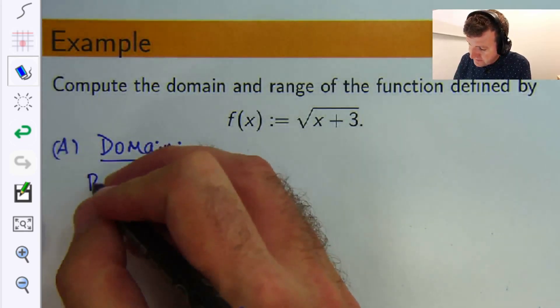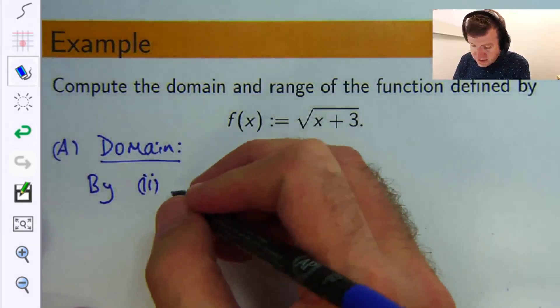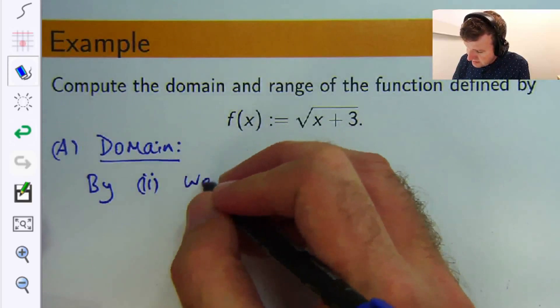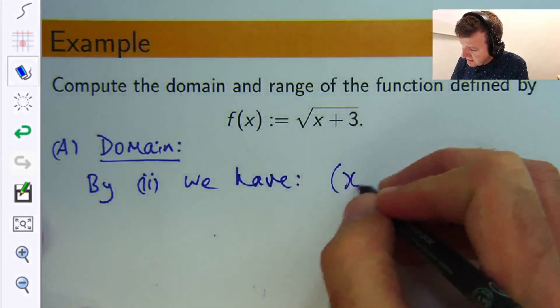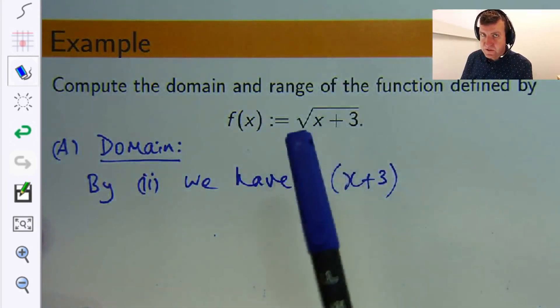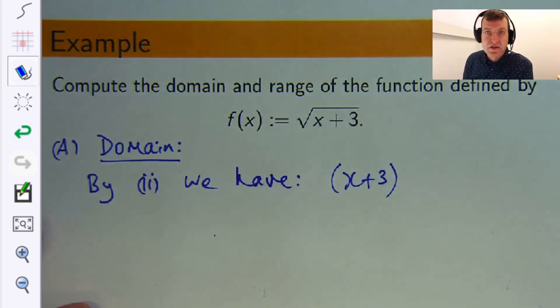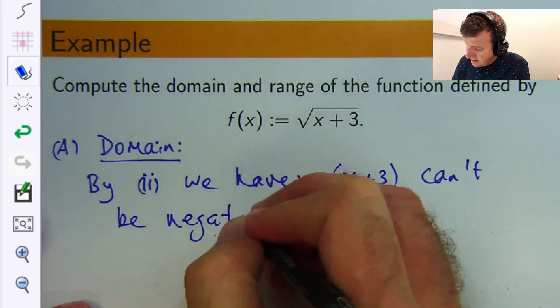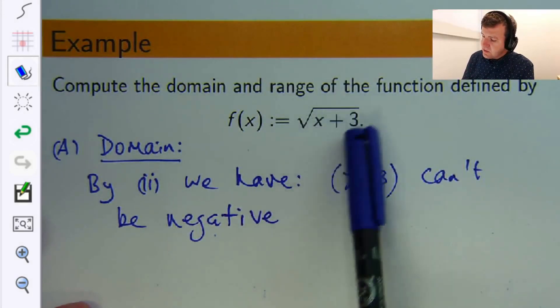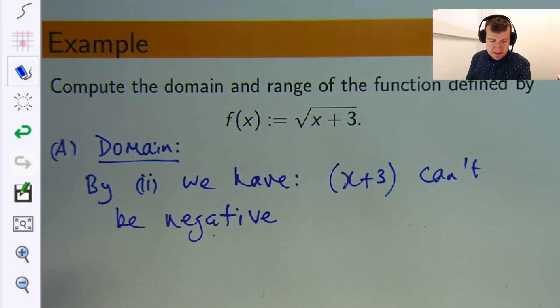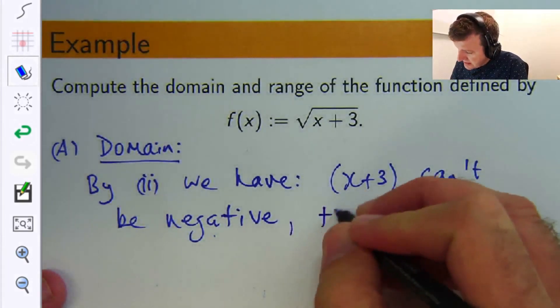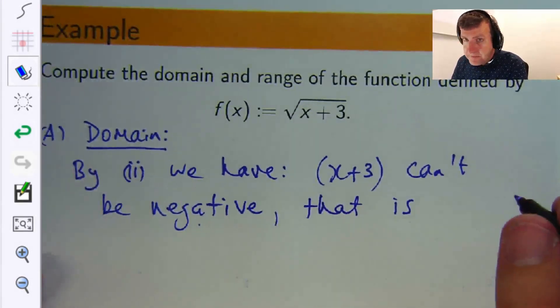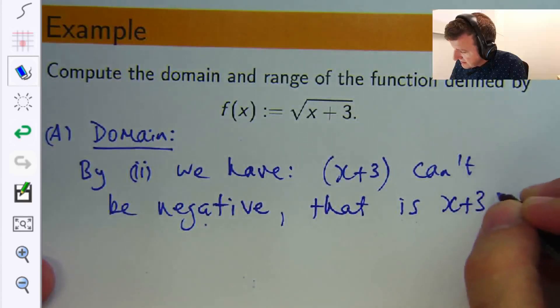So by top tip 2, we have the following: x plus three can't be negative because we're dealing with real numbers here, so we cannot take the square root of a negative number. So what does this mean? The thing inside the square root can't be negative. That means that x + 3 has to be greater than or equal to zero. So now we're making this more mathematical. We're forming an inequality. So that is x + 3 ≥ 0.